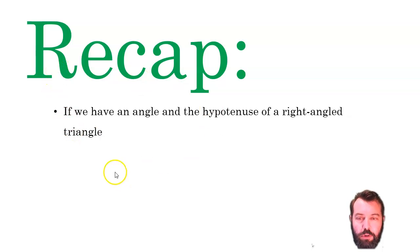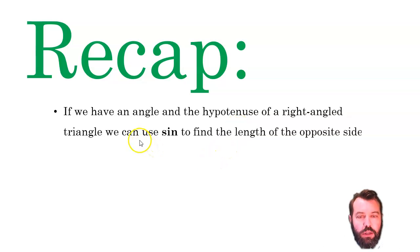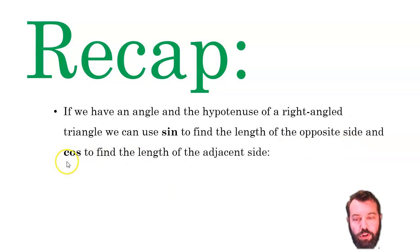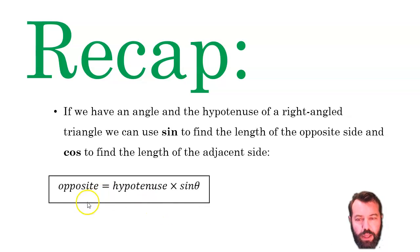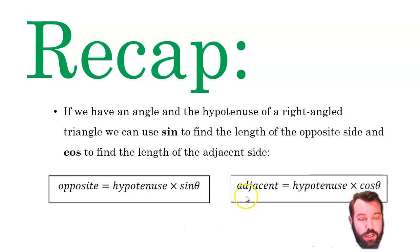Right, so just a reminder here. If we've got an angle and the hypotenuse in a right angle triangle, we can use sine to find the length of the opposite side. We can use cos to find the length of the adjacent side. The opposite is the hypotenuse times sine theta, and the adjacent is the hypotenuse times cos theta.